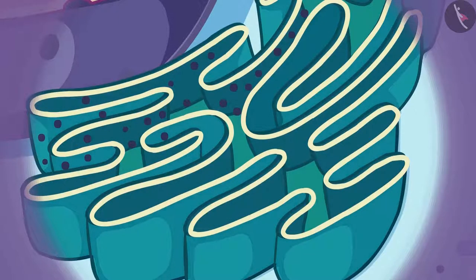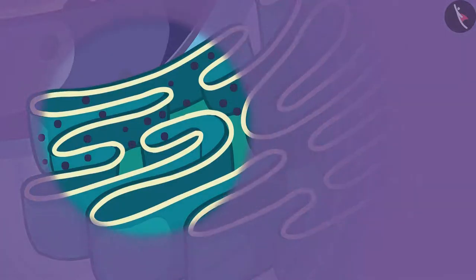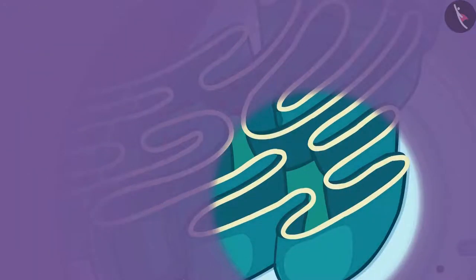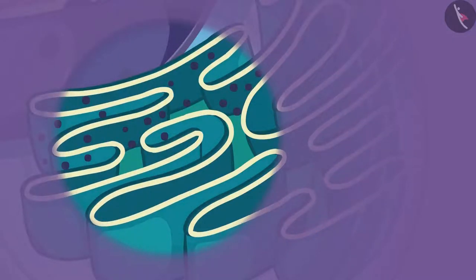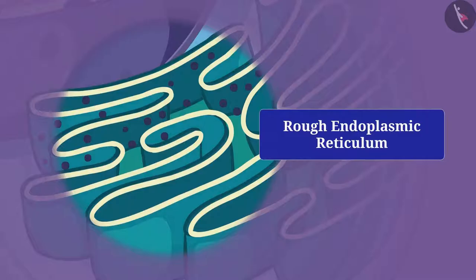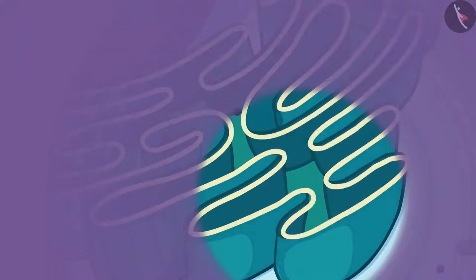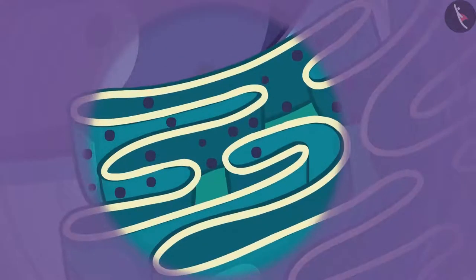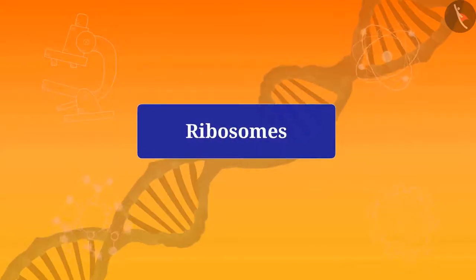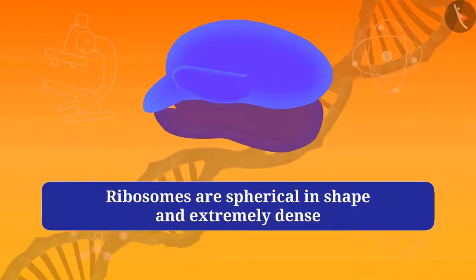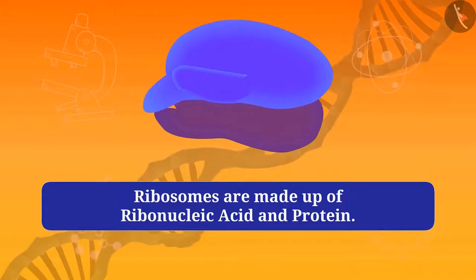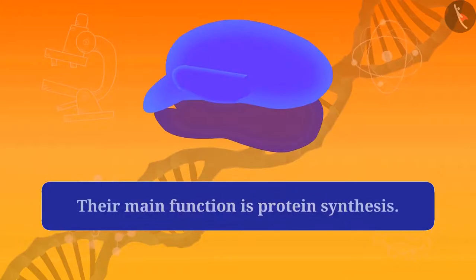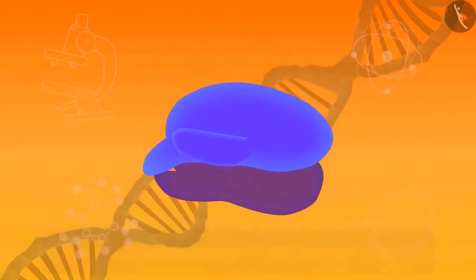If you look at it carefully under the microscope, you can see a difference in the structure. Somewhere there are black dots while elsewhere they are absent. The endoplasmic reticulum that has black dots is called rough endoplasmic reticulum, and those which do not have dots are called smooth endoplasmic reticulum. These black dots are called ribosomes. They are spherical in shape and extremely dense.